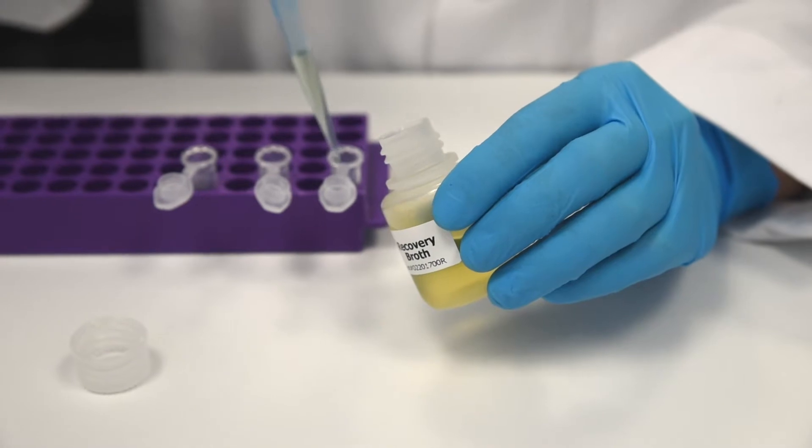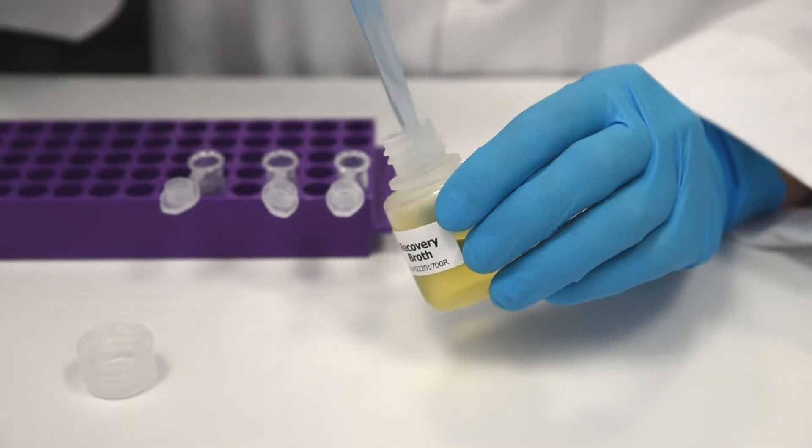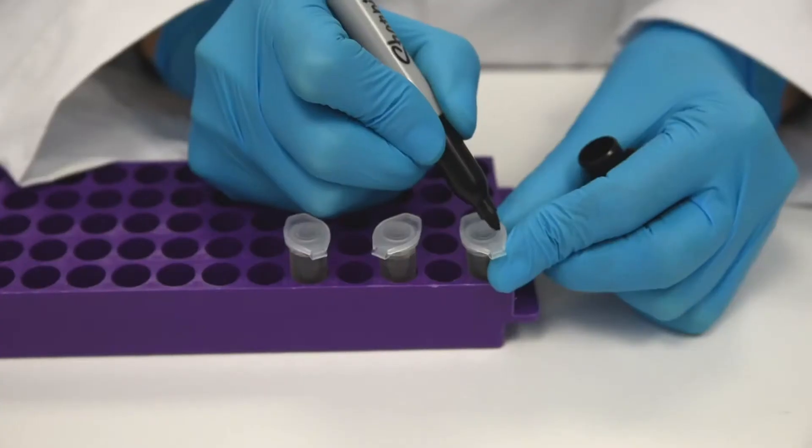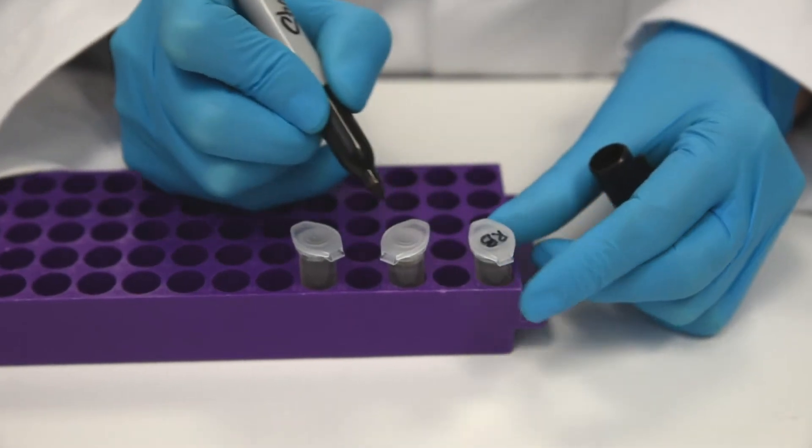Step 4: Dispense 1.5 mls of recovery broth into tubes for each of the 10 groups and keep at room temperature. Make sure to maintain sterile technique while aliquoting the recovery broth.